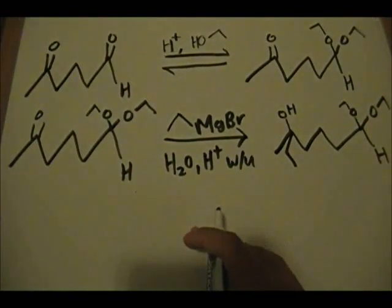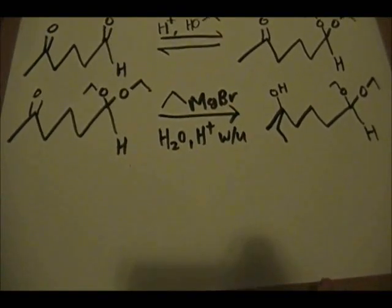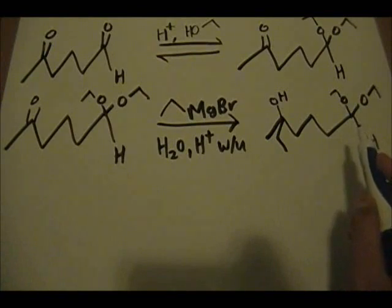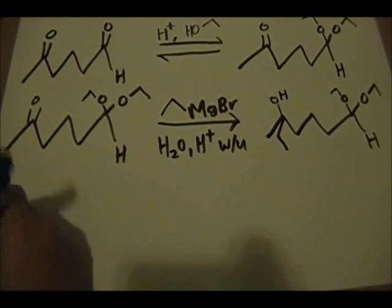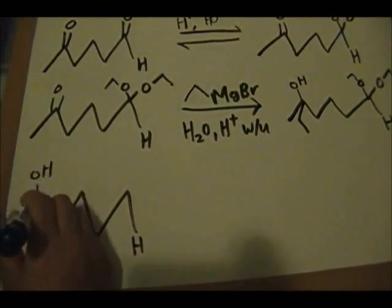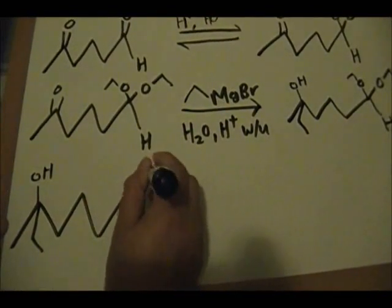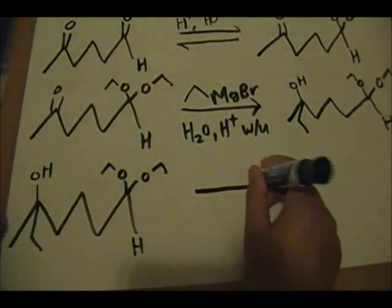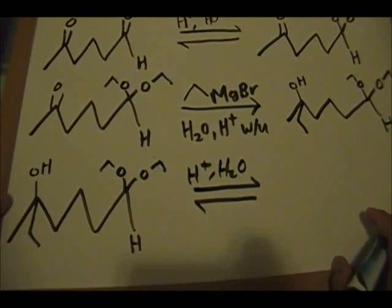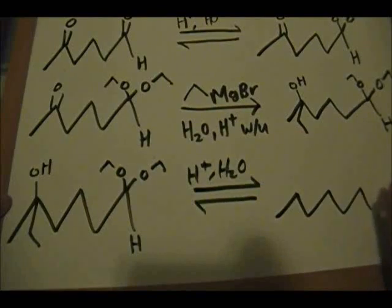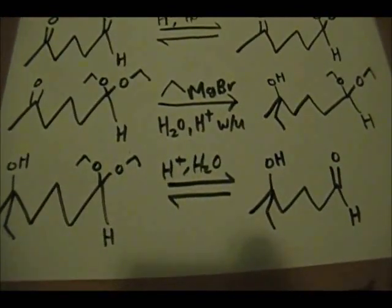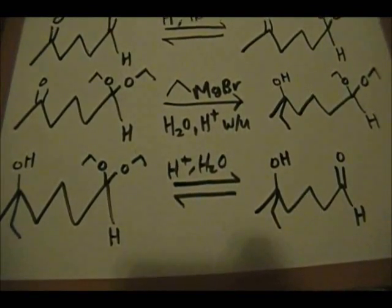Now, remember that acetals are a reversible process. We can regenerate the aldehyde by treating with H+/H2O. So we have our alcohol from the Grignard reaction, and the two-carbon chain, and our acetal — and now doing the reverse reaction with H+/H2O, we regenerate our aldehyde.